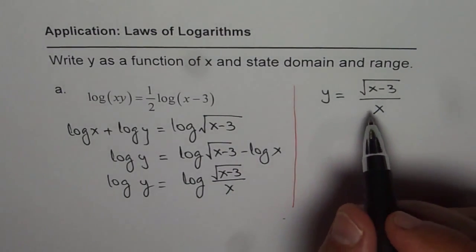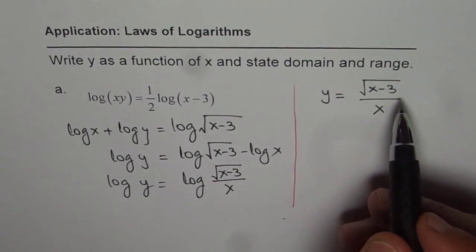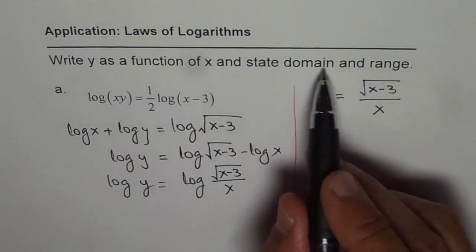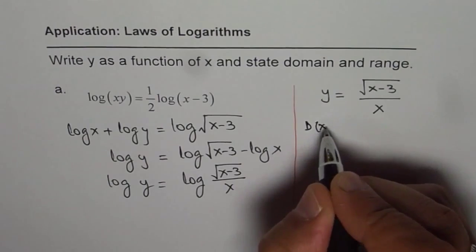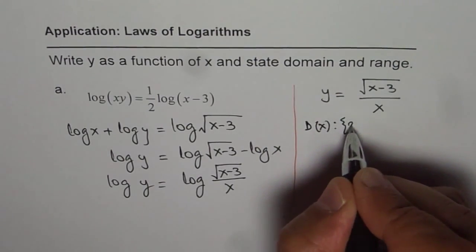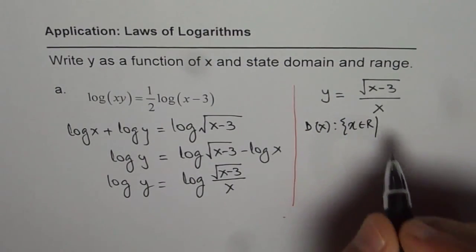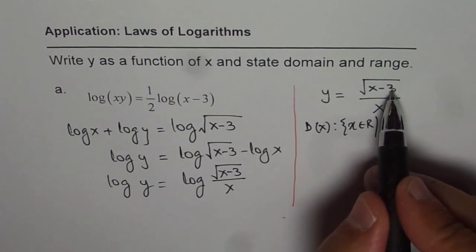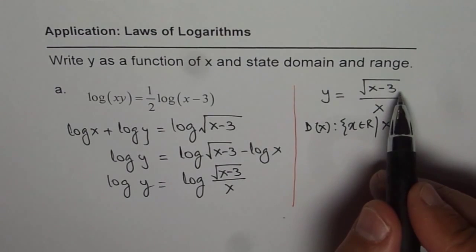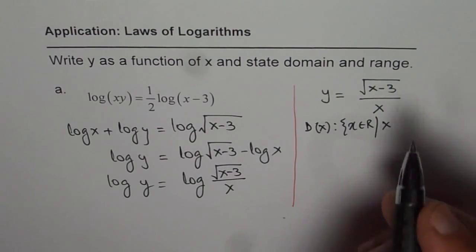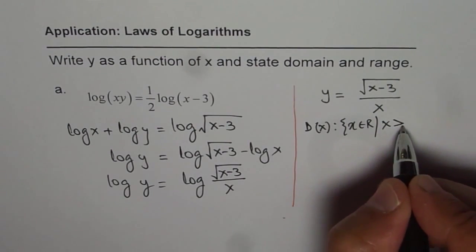Now as far as the domain and range is concerned, let's figure out the domain first. So the domain of this function is x belongs to real numbers where x has to be greater than 3. Otherwise, the numerator will be negative.